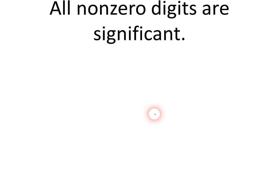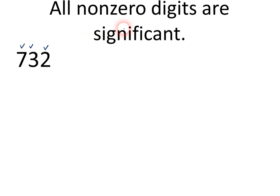There are some rules we just have to learn. Here's the first rule: all non-zero digits are significant. Here's an example — 732. Well, all of those are non-zero numbers. When we say non-zero, we mean the numbers 1, 2, 3, 4, 5, 6, 7, 8, and 9 — those are, of course, not zeros. So, all of those are significant, and we'd say that this number has three significant figures in it.